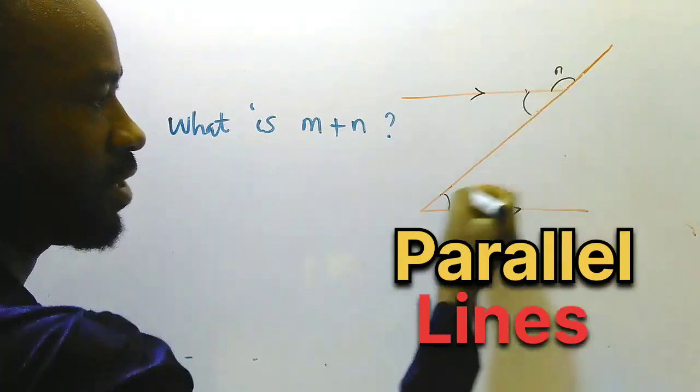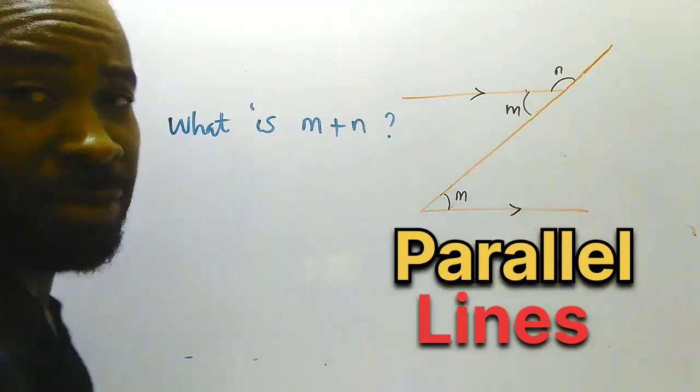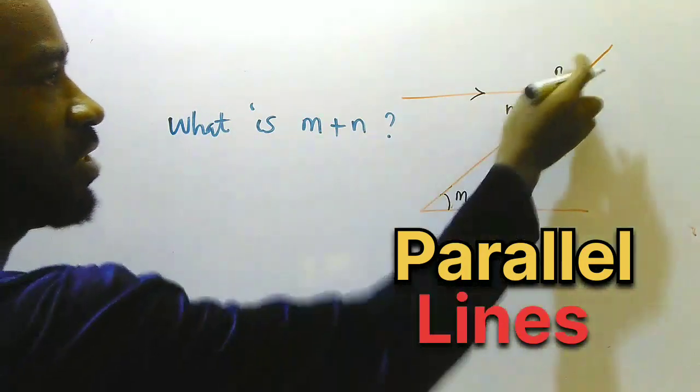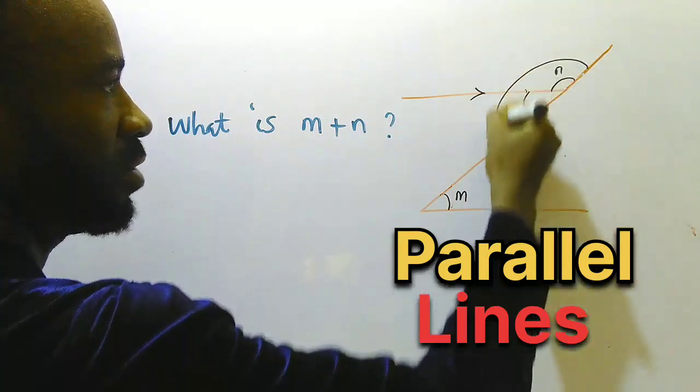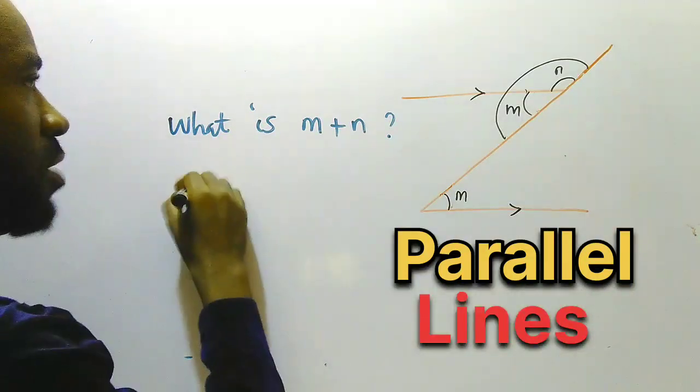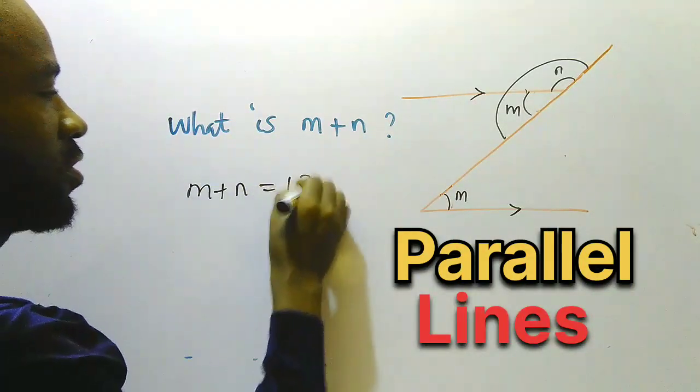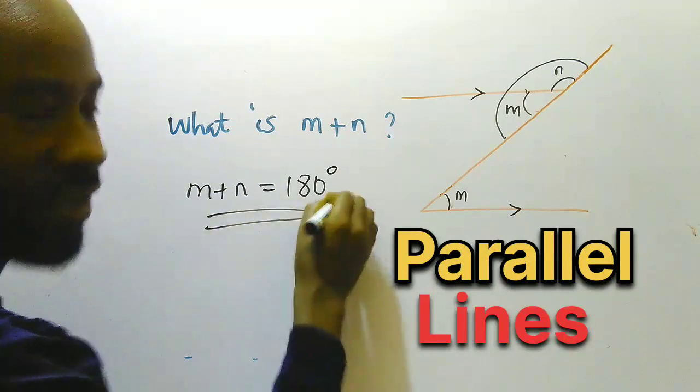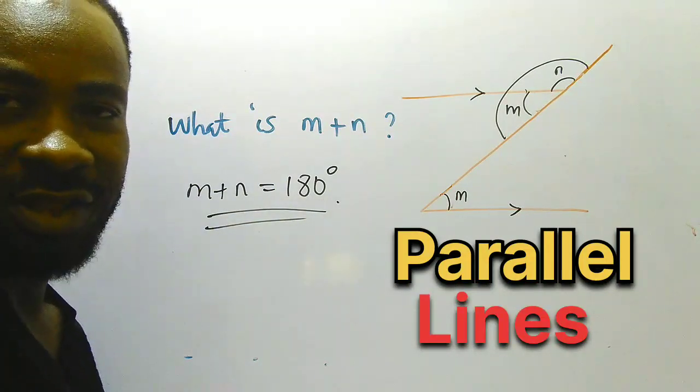So this angle and this angle will be equal. So here will be M. Therefore, if we add these two together, remember these two now, this M plus N, are on a straight line. So our M plus N is equal to 180 degrees. Our reason is angles on a straight line.